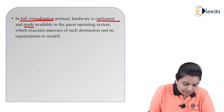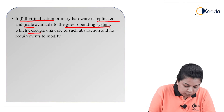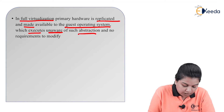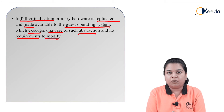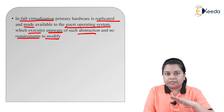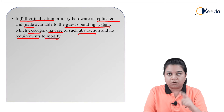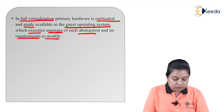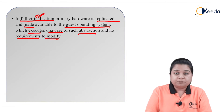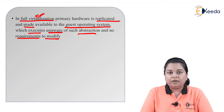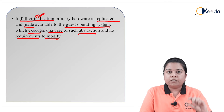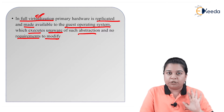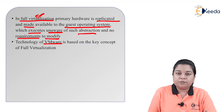In full virtualization, the primary hardware is replicated and made available to the guest operating system, which executes unaware of such abstraction with no requirements to modify. We have an underlying hardware or physical resources, then a virtualization layer in between which gives the full virtualization view to the user or the guest operating system.